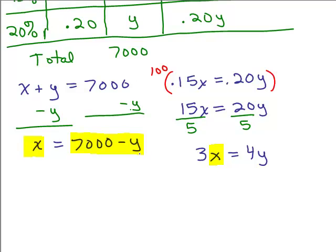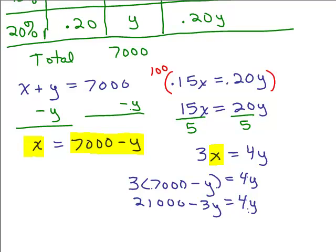Okay? So I am going to plug 7,000 minus Y in for X in this equation. So let's do that. Let's plug in 7,000 minus Y in place of X. So I've got 3 times 7,000 minus Y. So we're plugging in for X. So I have 3 times 7,000, 21,000 minus, don't forget to distribute your 3, minus 3Y equals 4Y. And then I'm going to add 3Y to both sides. So I have the variables on the right, constants on the left. And 7Y equals 21,000.